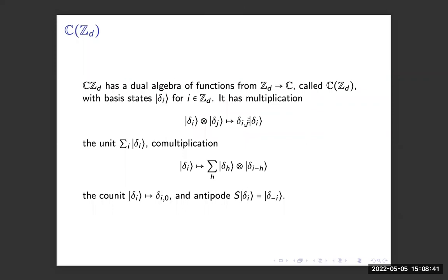This has a dual algebra where we flip everything around, in which the basis elements are delta functions from the group to the field. This has a multiplication given by a delta function, and the comultiplication is convolution. All the other additional bits are pretty obvious as well.